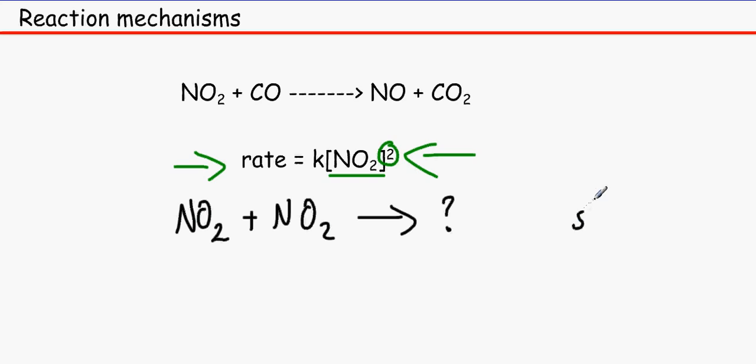That thing over here must react with CO. Why? Why does it react with CO? Because it is in the stoichiometric equation. So, CO must have a part in it somewhere. And it's not in the slow step. So it's got to be in the fast step.